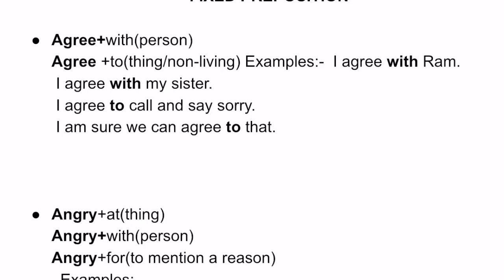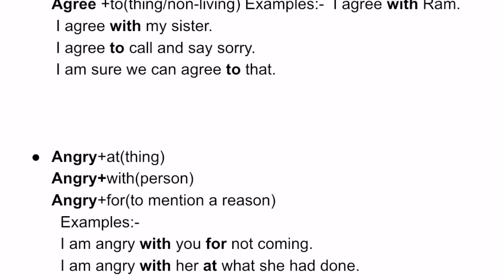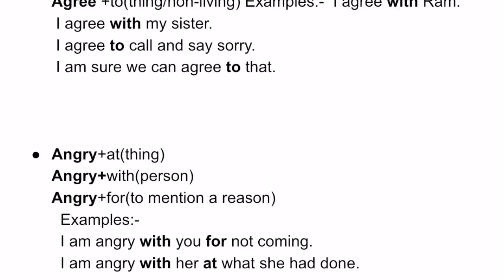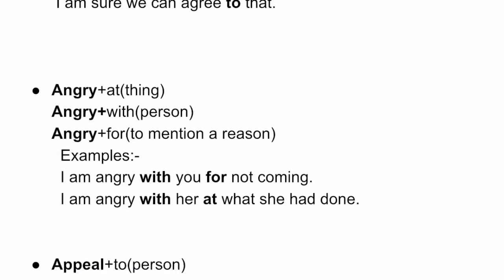'Angry for' is used whenever you are mentioning a certain reason why you are angry. For example, 'I am angry with you for not coming.' Why 'with you'? Because 'you' is a person. Why 'for not coming'? Because I am giving a reason. Next example: 'I am angry with her at what she had done.' Here 'angry with' because I am speaking about 'her,' who is a person. And 'at what she had done' — I have used 'at' because I am explaining a situation, not giving a reason. She had done something terrible, so I am angry with her. So I used 'at.'